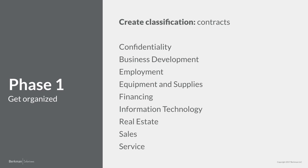Your list might look something like this: confidentiality agreements, business development, employment, equipment and supplies, financing, information technology, real estate, sales, and service. Your organization might differ — some of these may not apply and you may want to add others, but keep the list manageable.